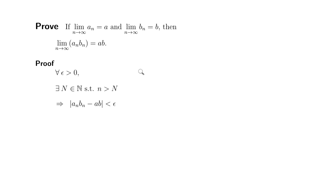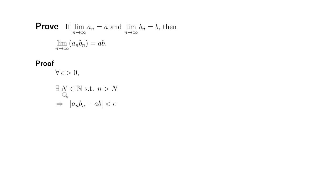Let's write down the definition. For all epsilon greater than 0, there exists capital N, which is a natural number, such that as long as n is greater than capital N, we can make sure that the absolute value of aₙ times bₙ minus ab is less than epsilon. So let's fill in some details so that we can establish the existence of such capital N.